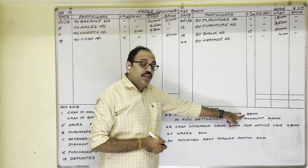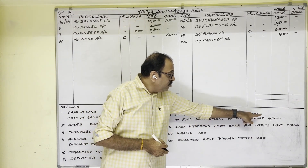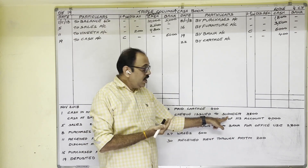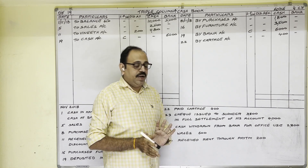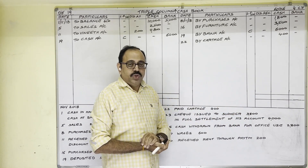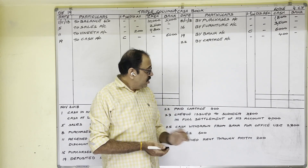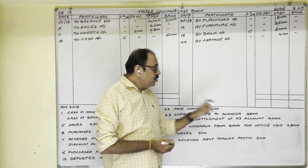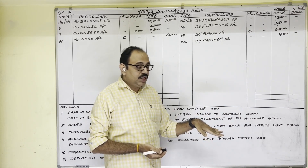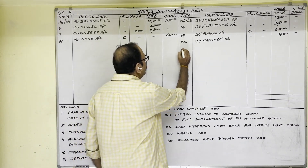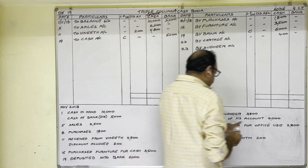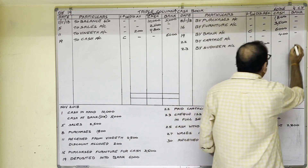23rd November: Cheque issued to Sudhir 3,800 in full settlement of his account of 4,000. Discount is given indirectly — we had to pay Sudhir 4,000, as final settlement we issued a cheque worth 3,800, so 200 is discount received. He goes to our bank, presents the cheque, and bank balance decreases — credit side bank column. Write 23rd date: 'By Sudhir account', discount column 200 rupees, bank column 3,800 rupees.